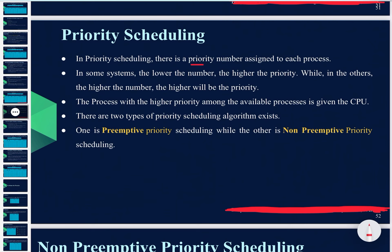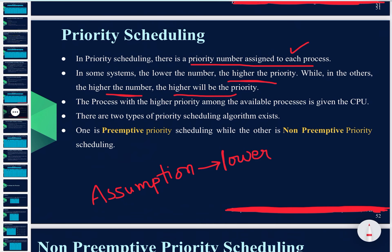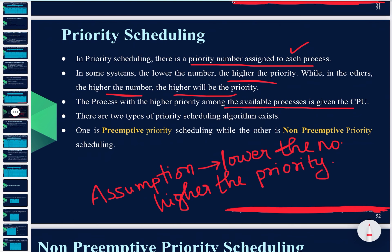In priority scheduling, a priority number is assigned to each process. In some systems, lower the number higher the priority, while in others higher the number higher the priority. Our assumption is: lower the number, higher the priority. The process with higher priority among the available processes is given to the CPU first. There are two types: preemptive priority scheduling and non-preemptive priority scheduling.